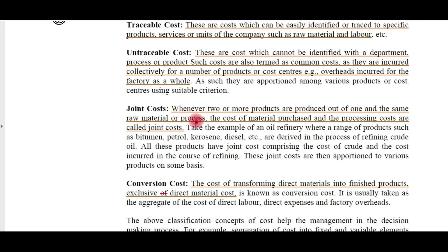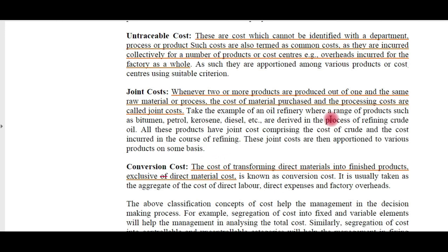Joint costs: whenever two or more products are produced from the same raw material and process, the cost of material purchased and the processing costs are called joint costs. The same raw material and labor are used, but multiple products are generated — like in an oil refinery, where crude oil is the input and kerosene, petrol, and diesel are all generated. The cost incurred in procuring crude oil is the cost for all the items. These joint costs are appropriated to various products at a later point on different bases.